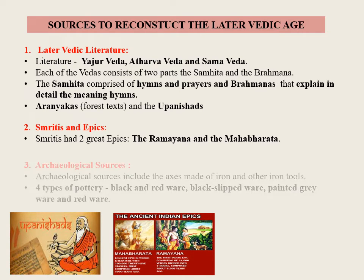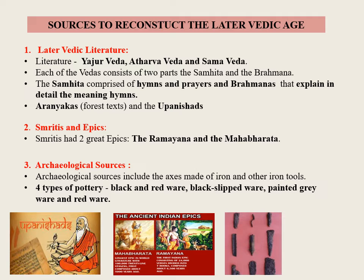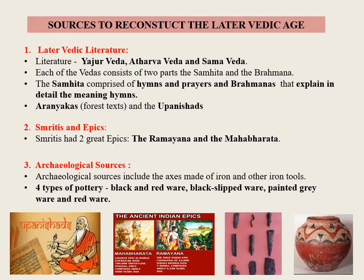The archaeological sources include axes made of iron and other iron tools. The Later Vedic people were familiar with four types of pottery: the black and red ware, black slipped ware, painted grey ware, and red ware.